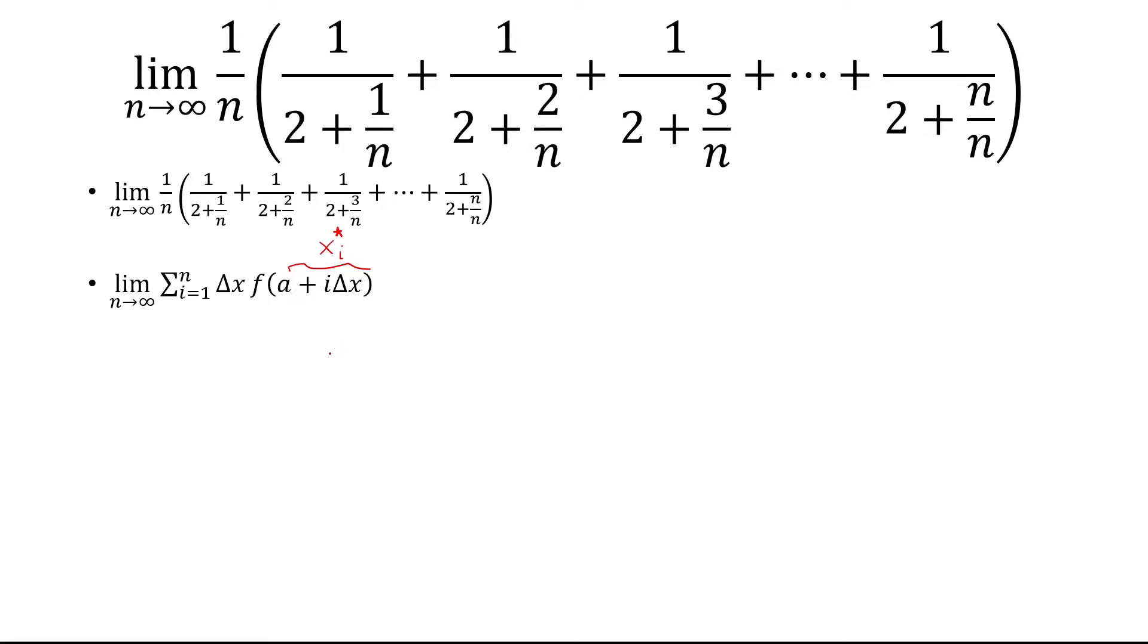And so now, if we expand this further, delta x clearly has to be 1 over n here, and then f of xi star is obviously 1 over 2 plus i over n.